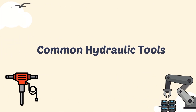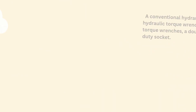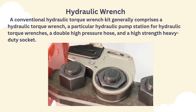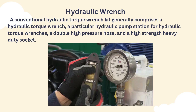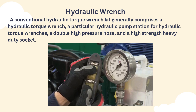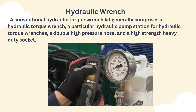Common hydraulic tools — Hydraulic Wrench: a conventional hydraulic torque wrench kit generally comprises a hydraulic torque wrench, a hydraulic pump station for hydraulic torque wrenches, a double high-pressure hose, and a high-strength heavy-duty socket.